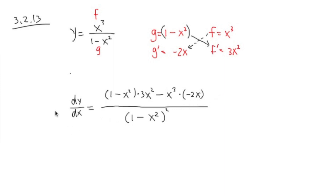So this is it. Once again, this is the only calculus step. The rest is just a bunch of algebra simplifications. All right, so we can distribute this backwards. And 3x squared times 1, we get 3x squared. 3x squared times negative x squared, we get minus 3x to the fourth power.